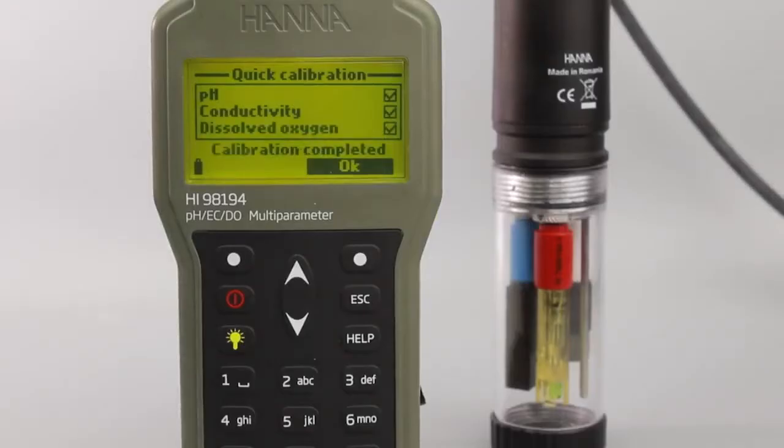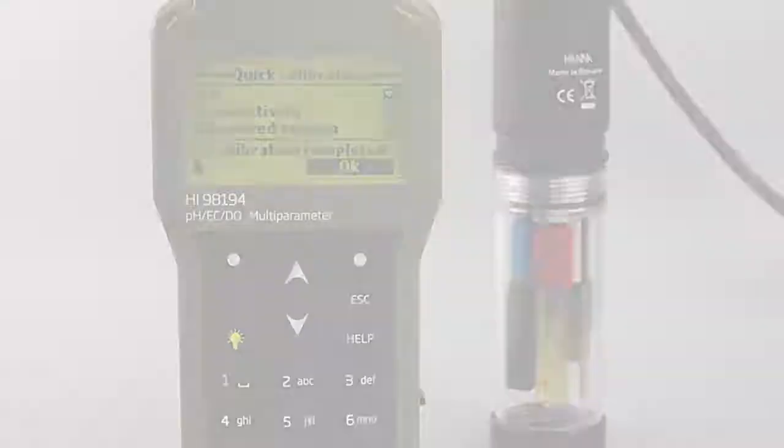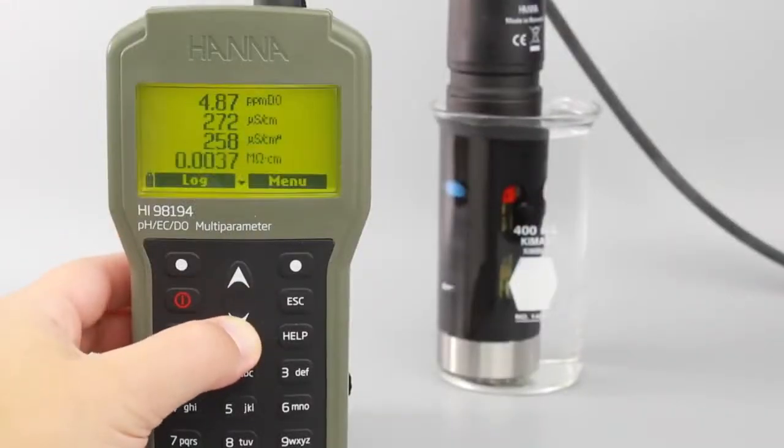Once your meter is calibrated, you're now ready to begin taking measurements. Submerge the clean probe into the sample you'd like to measure, pressing the buttons to navigate between your measurements.